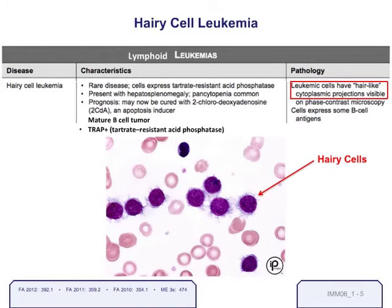The next leukemia is hairy cell leukemia, primarily a disease of the elderly. It's a mature B-cell tumor with small filament-like projections all around the cell cytoplasm that resemble hairs — hence the name. The important thing to remember for Step 1 is that if you stain it, it's TRAP positive — tartrate-resistant acid phosphatase. The mnemonic is: you'd want to TRAP a hairy spider. Hairy cell leukemia is TRAP positive.